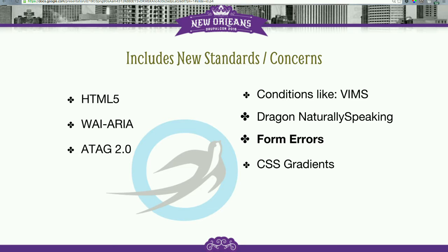The last item in the list of new elements is ATAG — the Authoring Tools Accessibility Guideline. ATAG is a great standard, partly because it was designed primarily in Canada. It addresses one of the main problems with accessible websites: you may be able to create a really accessible framework for your users to create content, but as soon as they start putting in their content — copying and pasting from Word or whatever else — it breaks the accessibility you spent months trying to build into the product. ATAG is really an effort to make it easier for content authors to produce good content.